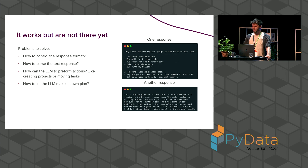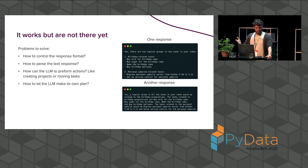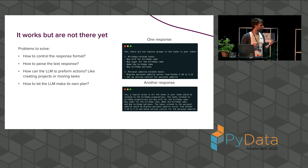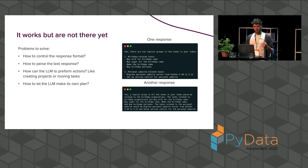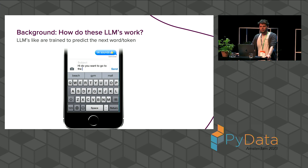But we're not there yet. These are some example responses you can get, and as you can see they're all quite differently formatted. That's the pain with working with natural language — there are so many different ways to write the same thing, and parsing that is really painful in Python. Other things we still need to do: how can we let it move tasks, create new projects, or let an LLM make a plan to accomplish more abstract tasks? But before we dive into that, we need a bit of background on how these LLMs work.